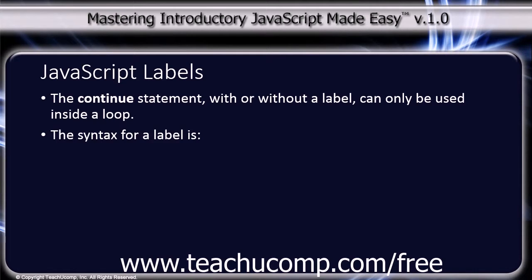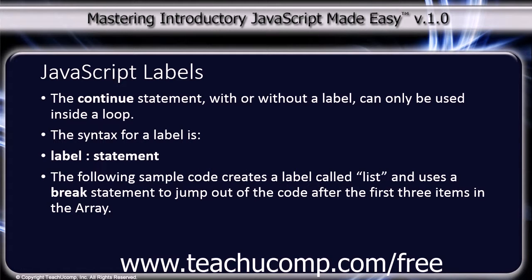The basic syntax for a label is: label colon statement, where label is whatever word you choose for the name of the label. The following sample code creates a label called list and uses a break statement to jump out of the code after the first three items in the array.